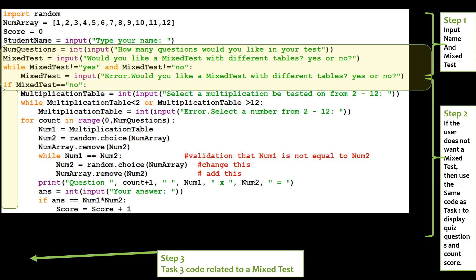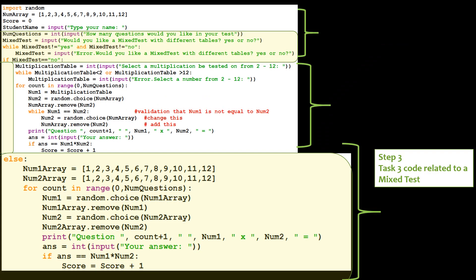Okay, we needed to add some more prompts. And in step 2, we simply had the same code from task 1, which will give a normal test. Now we have the new part of task 3, else.